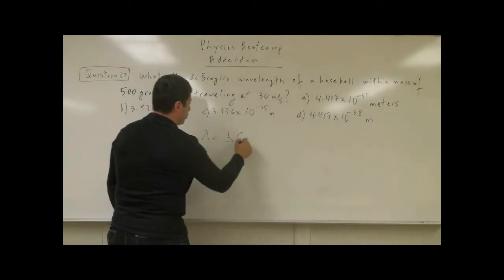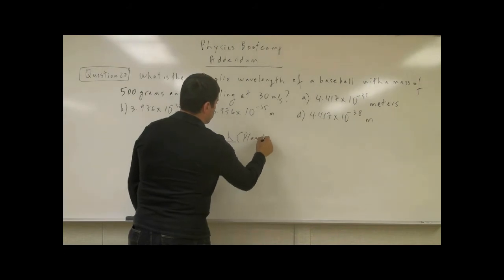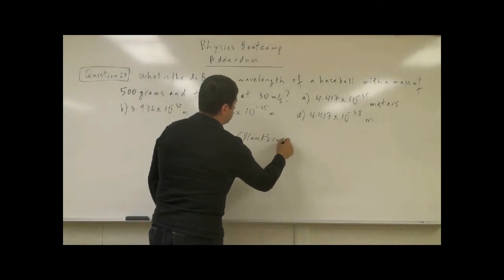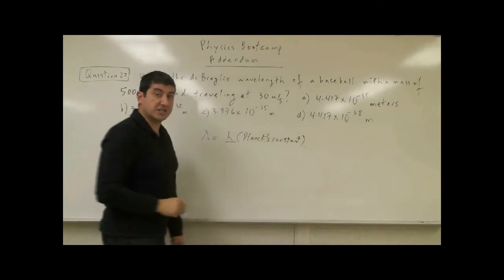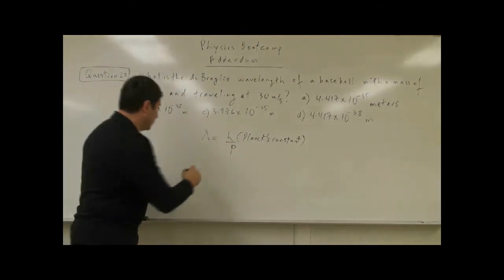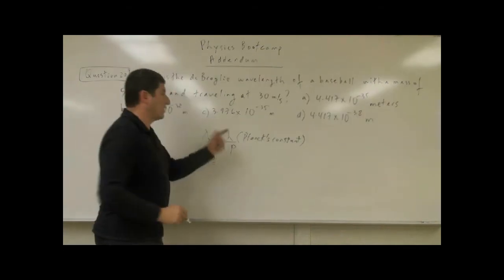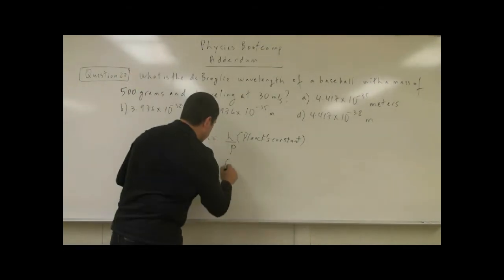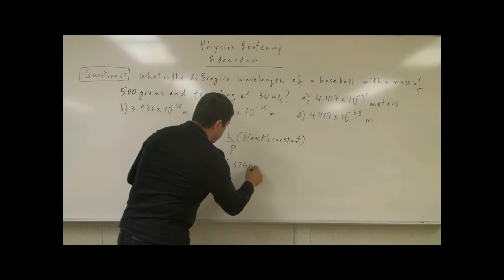This is called Planck's constant from the famous physicist Max Planck. Divide that by the linear momentum p. In this case what we have to do is use Planck's constant 6.626 times 10 to the minus 34.